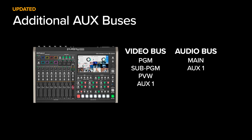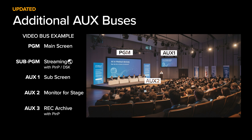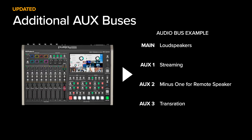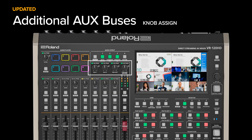Both the video and audio AUX buses have been expanded to three channels each, greatly increasing the flexibility for video production and monitoring. The video AUX buses now support individual settings for PNP and DSK. For audio, this enhancement makes it easier to manage complex routing for hybrid events, with the ability to assign volume controls to specific audio buses using physical knobs.